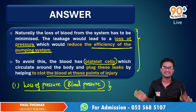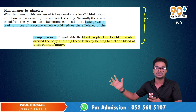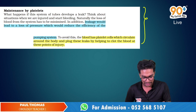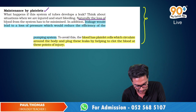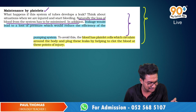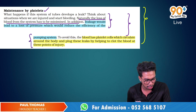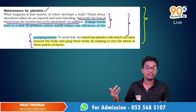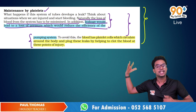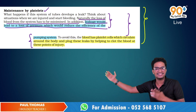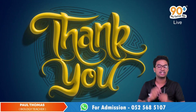I will show you the magic effect — all the points I mentioned are directly from your textbook. Take the pages that mention the maintenance by platelets under the category of transportation and underline or highlight all those points. These are the exact sentences needed as your answer. The textbook already states: 'leakage would lead to a loss of pressure which would reduce the efficiency of the pumping system; to avoid this, blood has platelet cells which circulate around the body and plug these leaks by helping to clot the blood at the point of injury.'